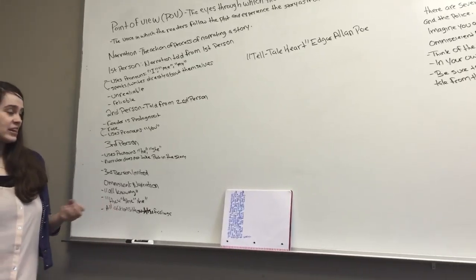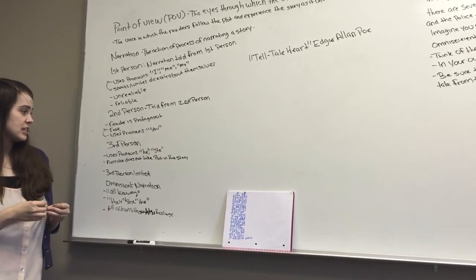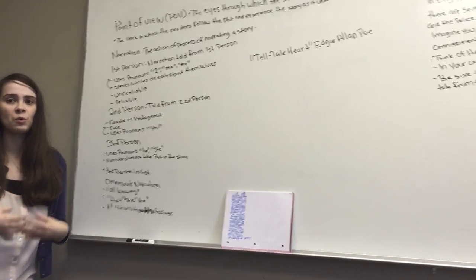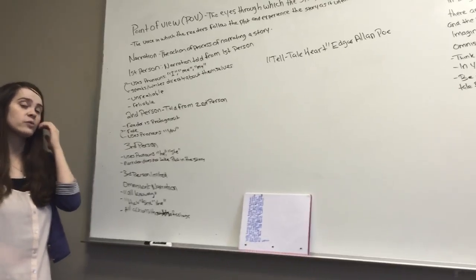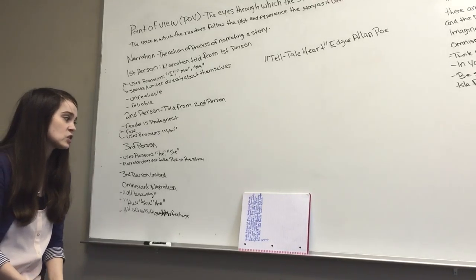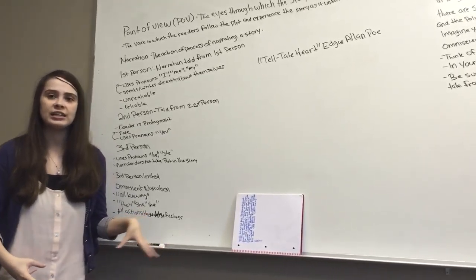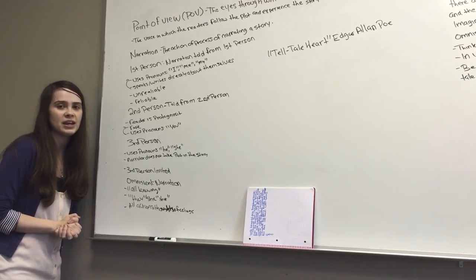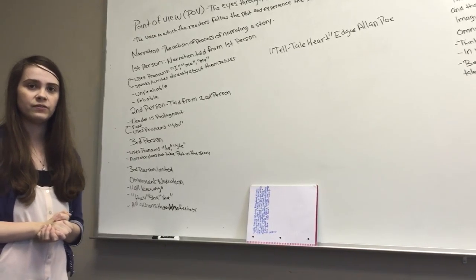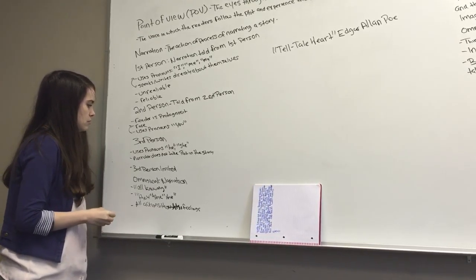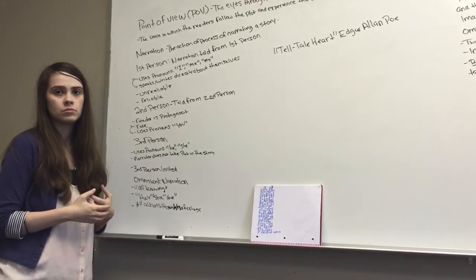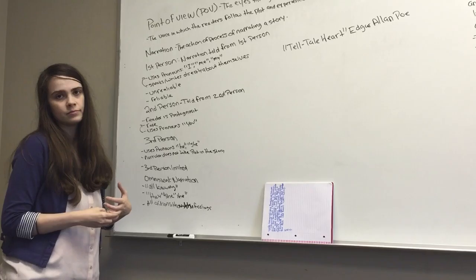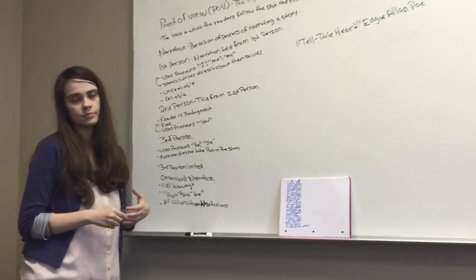And so we question them. And the next type we're going to go over is third person. What is third person narration? He, she. Excellent. Very good. The third person does use the pronouns he and she, and it is told from outside, and the narrator does not take part of the story. And there are two kinds of third person, well, there's different kinds, but who can give me an example of a third person narrative?